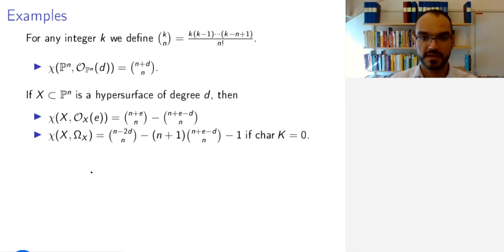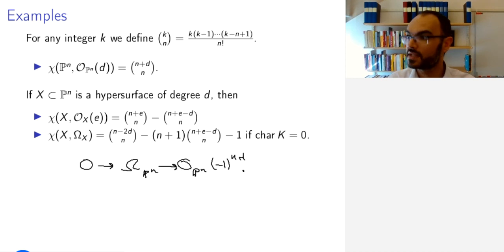For this, we use two exact sequences that we know in this setting. The first is the Euler sequence, which is zero, Ω_{P^n}, O_{P^n}(-1) to the power n plus one, O_{P^n}, zero. So this is the Euler sequence.